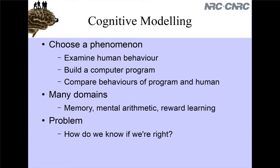This sort of approach ends up being categorized as cognitive modeling. You choose some phenomenon, examine human behavior, form ideas about what could be underlying it, build a computer program based on those ideas, and compare the program's behavior to humans. This has been applied to many domains — memory, mental arithmetic, word learning, basically any domain of psychology. The common problem is: just because I've made a computer program that produces the same data as humans, so what? There's a lot you can play with to make any output you want.